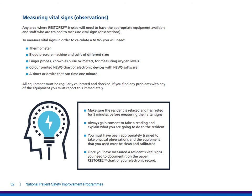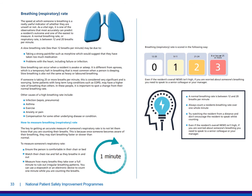Some good tips for taking observations: make sure the resident is relaxed and has rested for five minutes before measuring vital signs. Always gain consent to take a reading and explain what you're going to do. You must have been appropriately trained to take physical observations, and the equipment used must be clean and calibrated. Once you've measured a resident's vital signs, document it on the paper Restore2 chart or your electronic record.